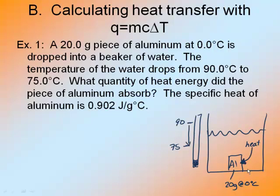And I can tell that because the temperature of the water is dropping. So it was 90, it is dropping down to 75, so it is losing heat, and all that heat is going into the aluminum. So my aluminum is endothermic. My water is exothermic.